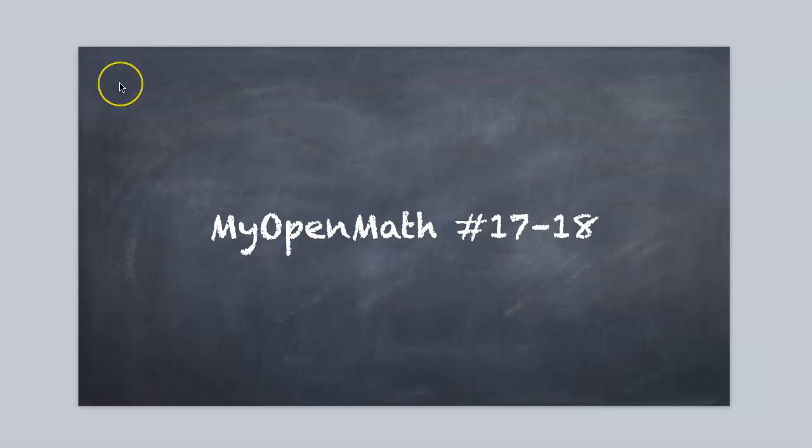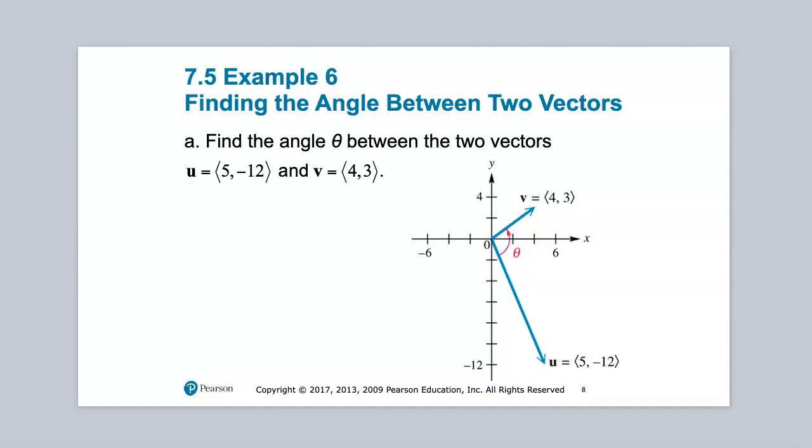In this lecture, we're going to look at my open math problems 17 and 18, but before we do, I want to show you a couple examples. Here we have two vectors, (4,3) and (5,-12), and we want to find the angle between these two vectors.